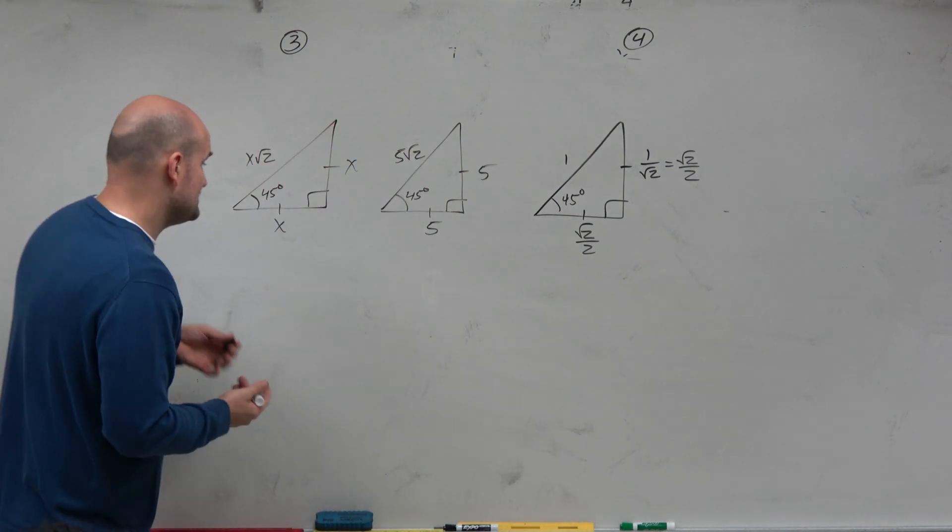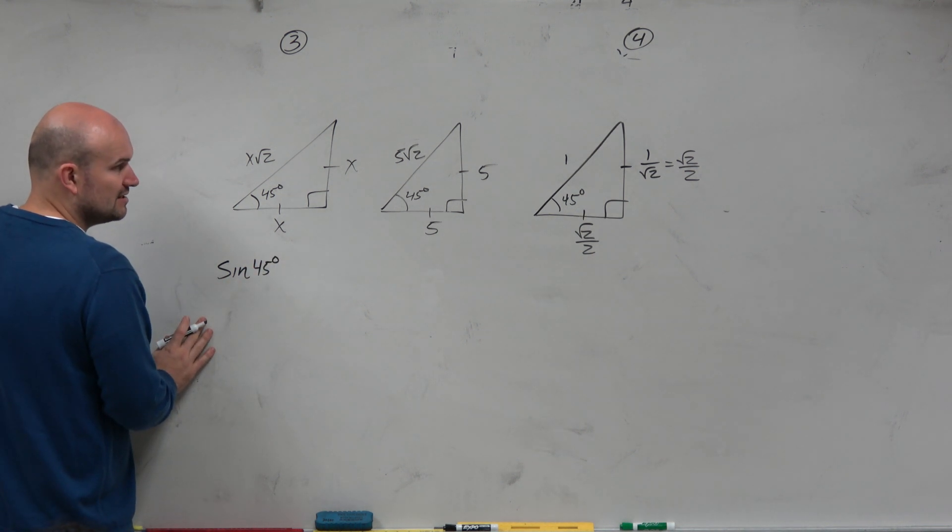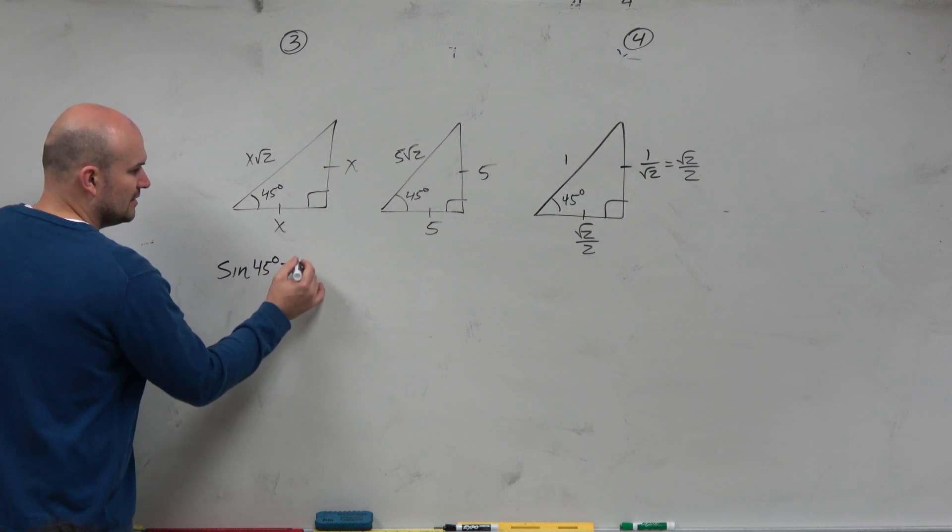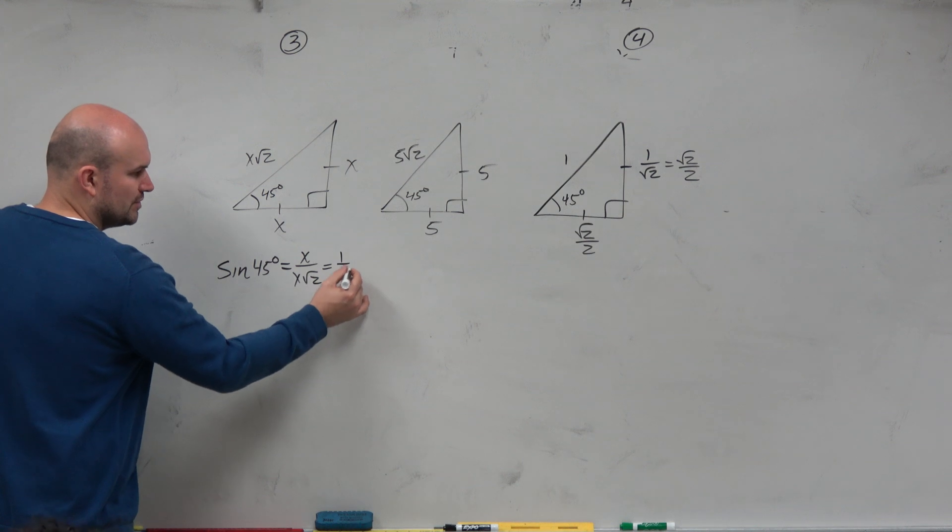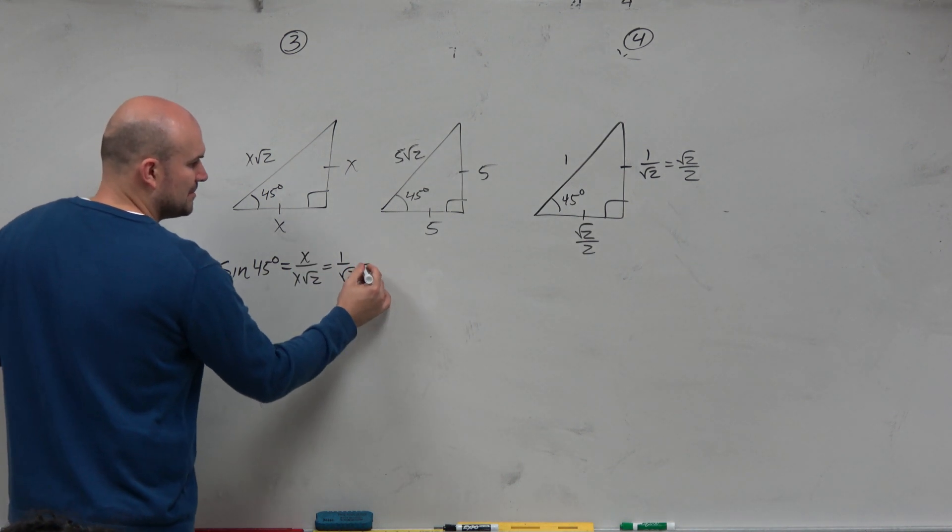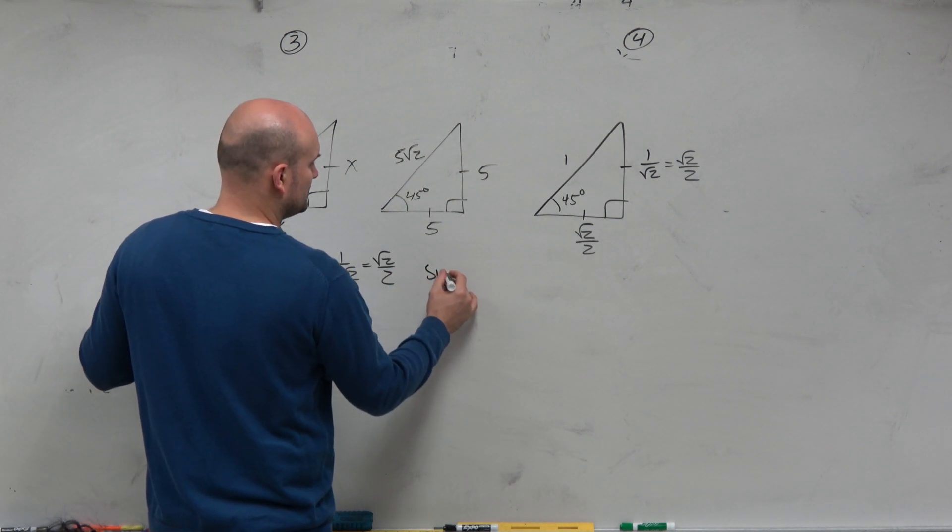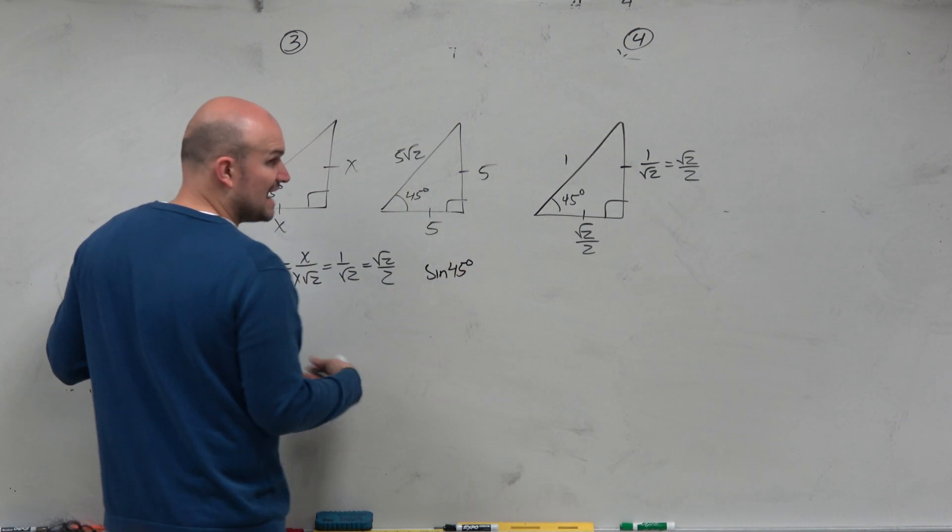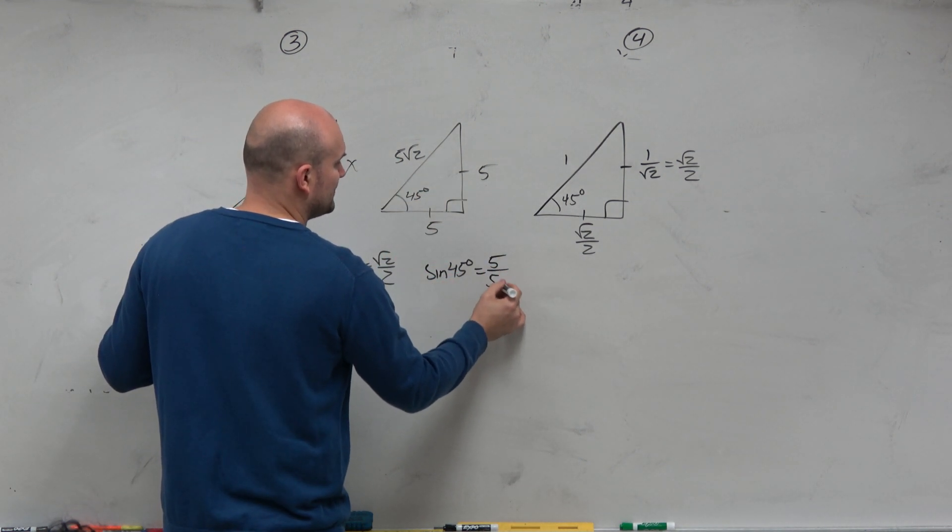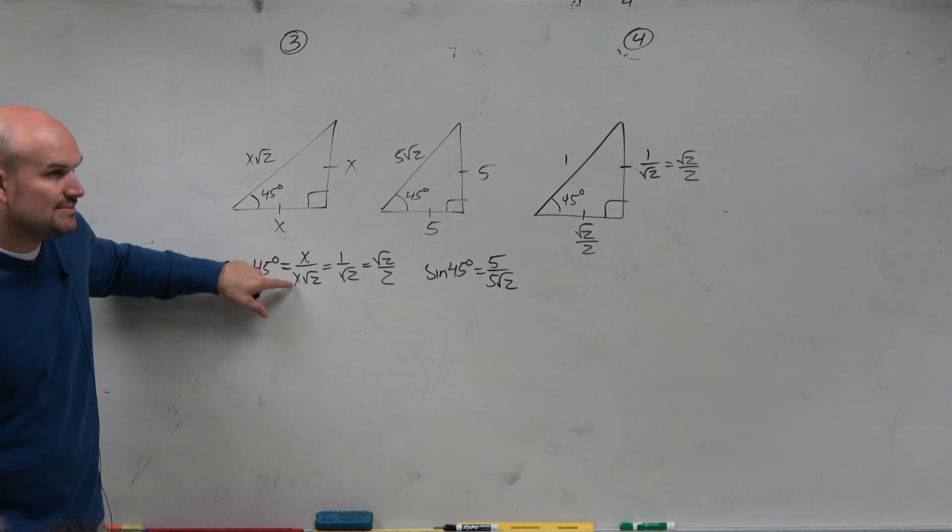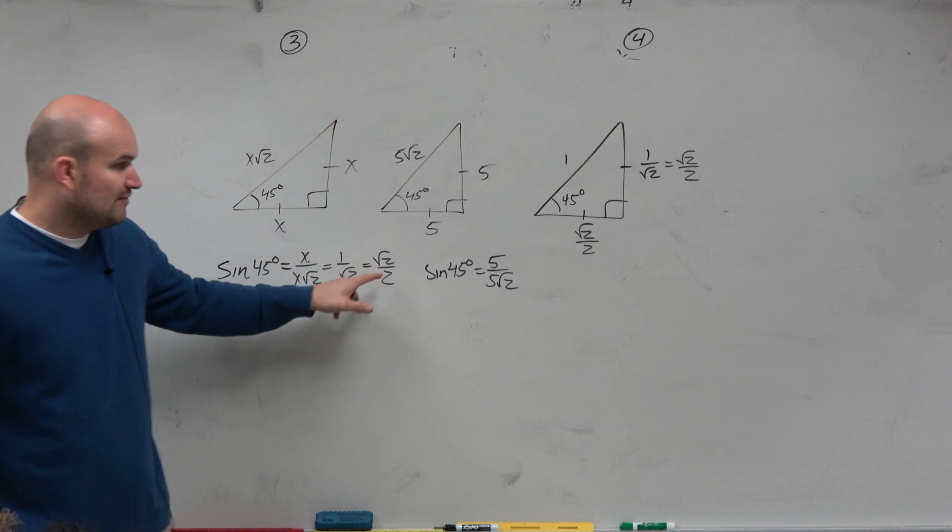What we talked about was the sine of all of these triangles of 45 degrees is exactly the same: x over x√2. That simplifies to 1 over √2. Rationalize the denominator, you get √2/2. What about the sine of 45 degrees on this triangle? Remember, sine is opposite over hypotenuse. That is 5 over 5√2. So guys, what you recognized was it didn't matter if it was x, if it was 5, if it was 10, if it was 20. It's always going to simplify to √2/2.